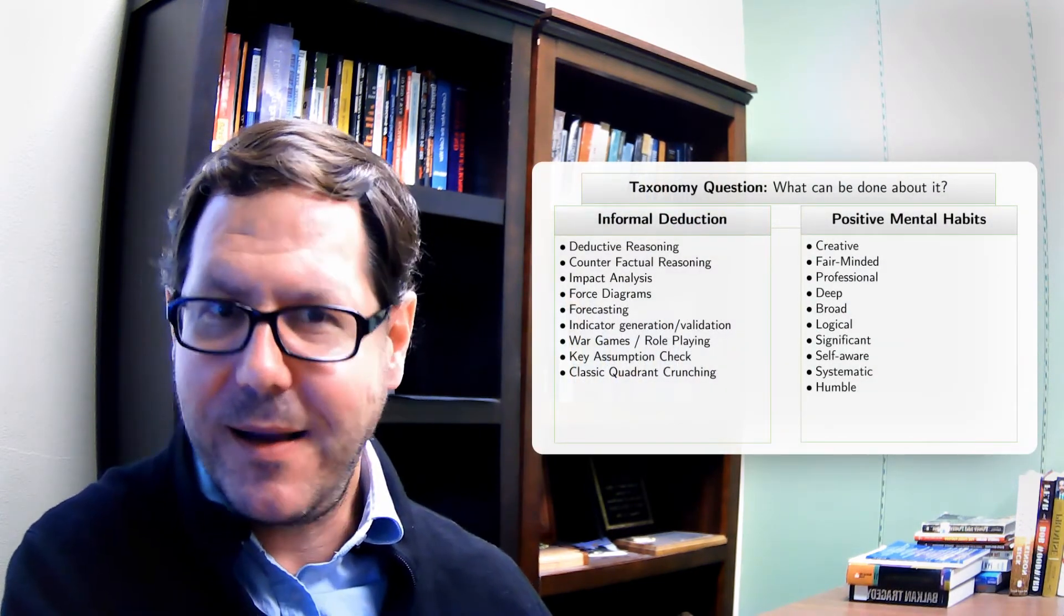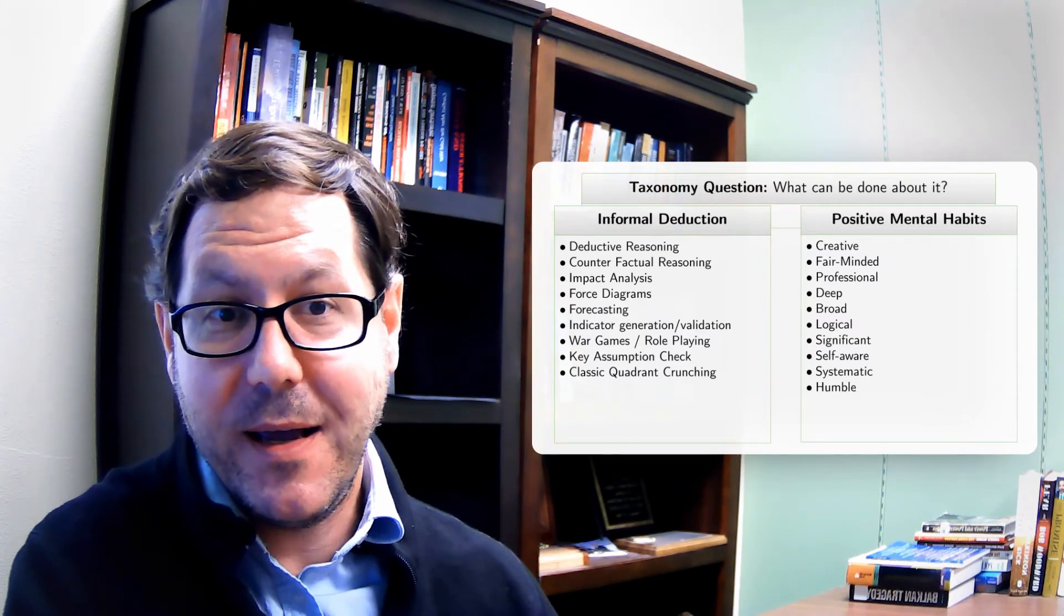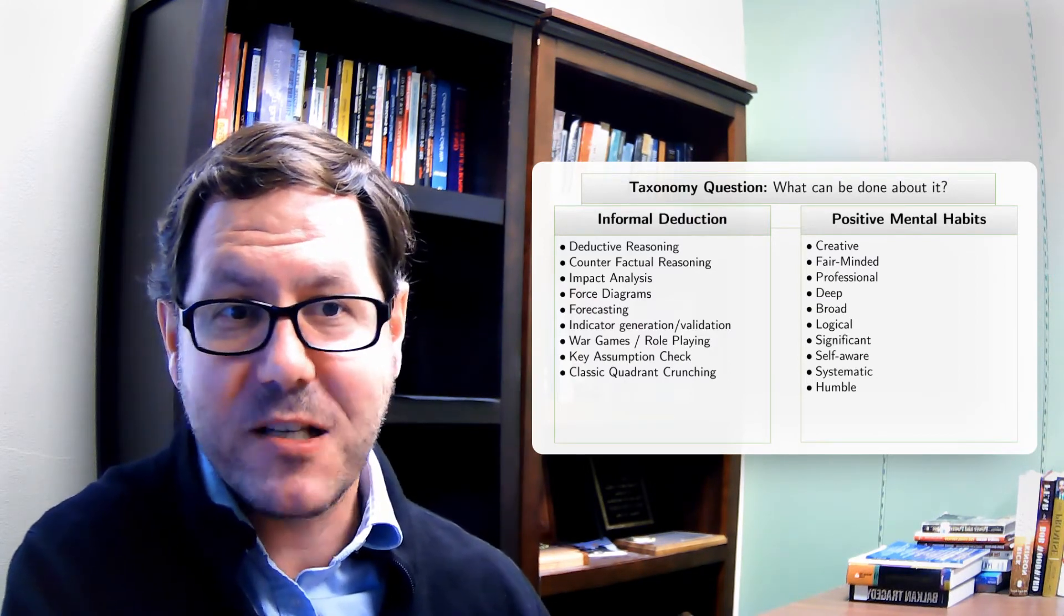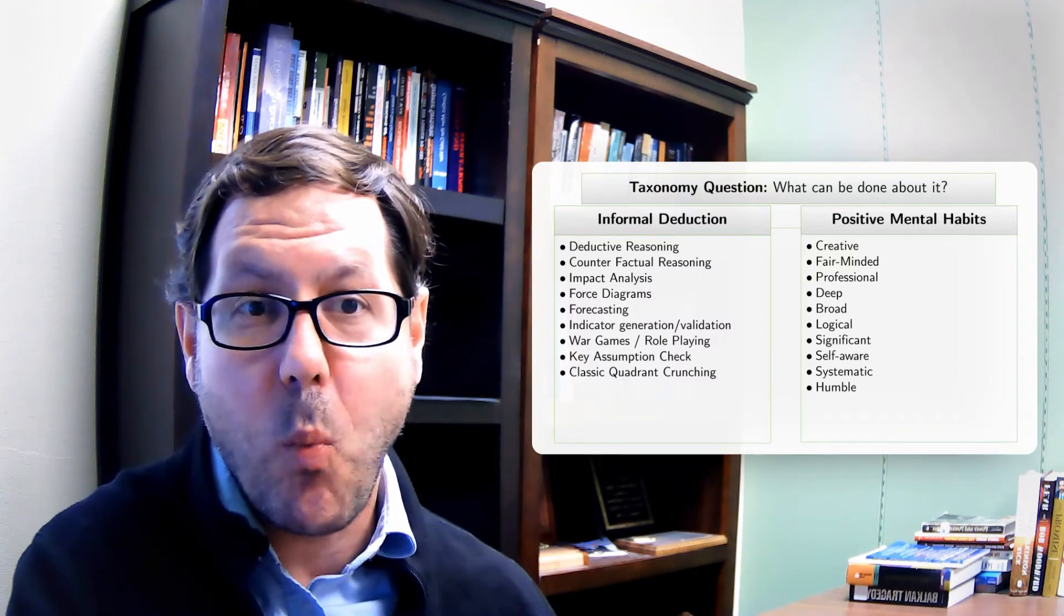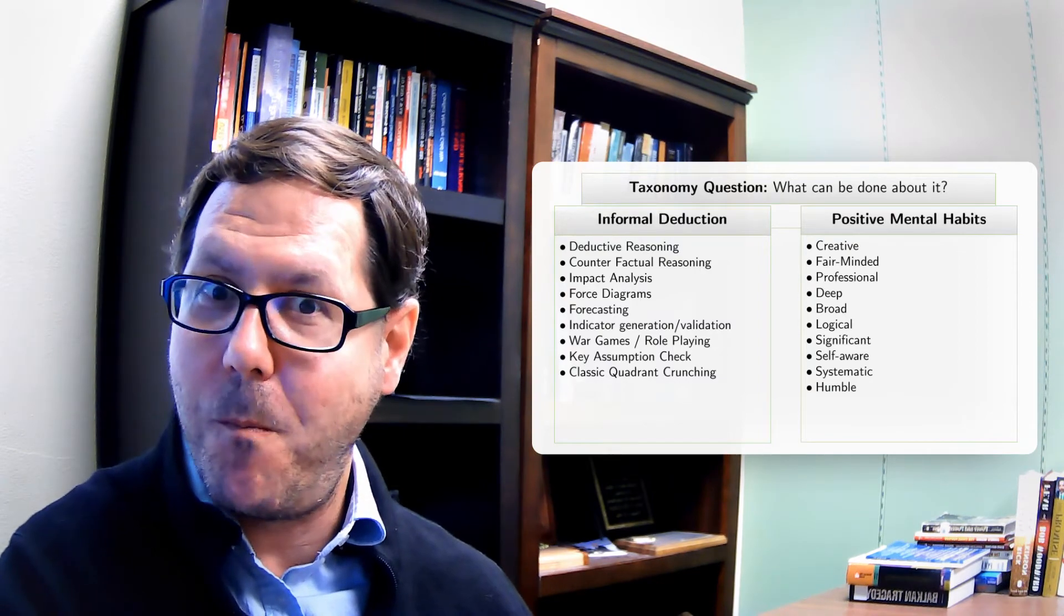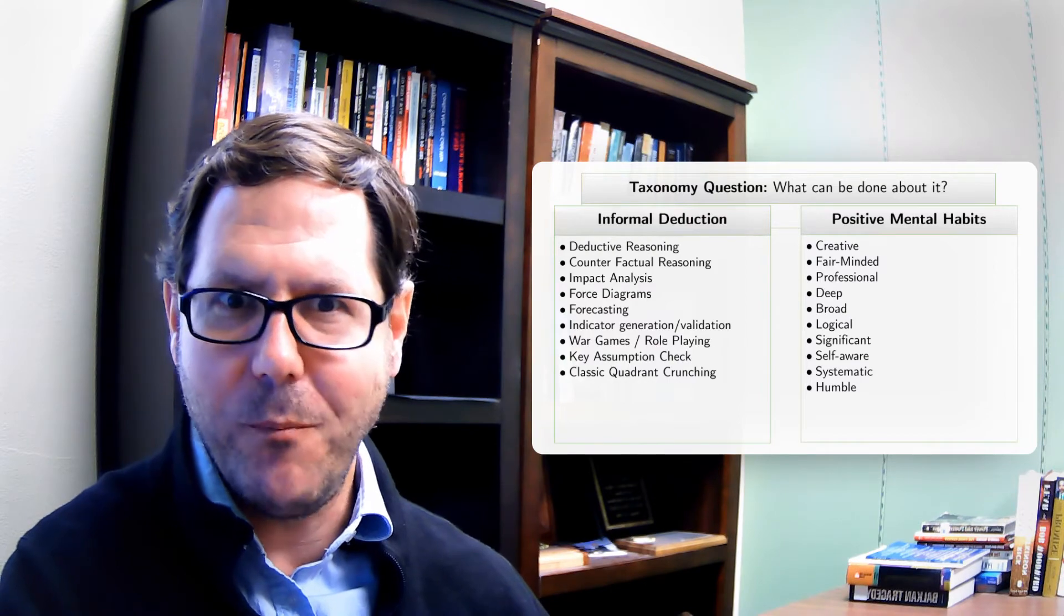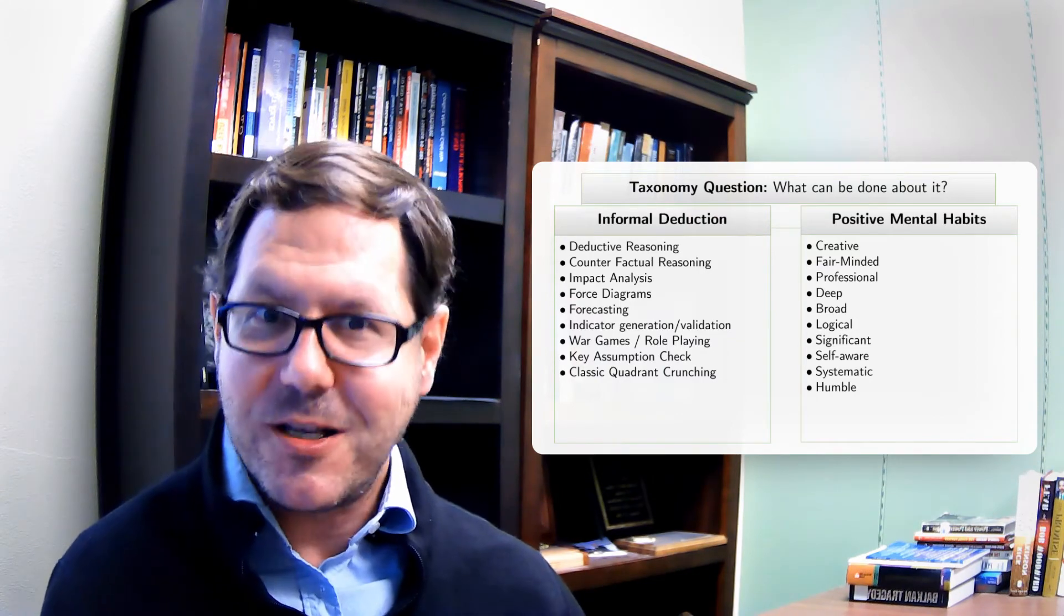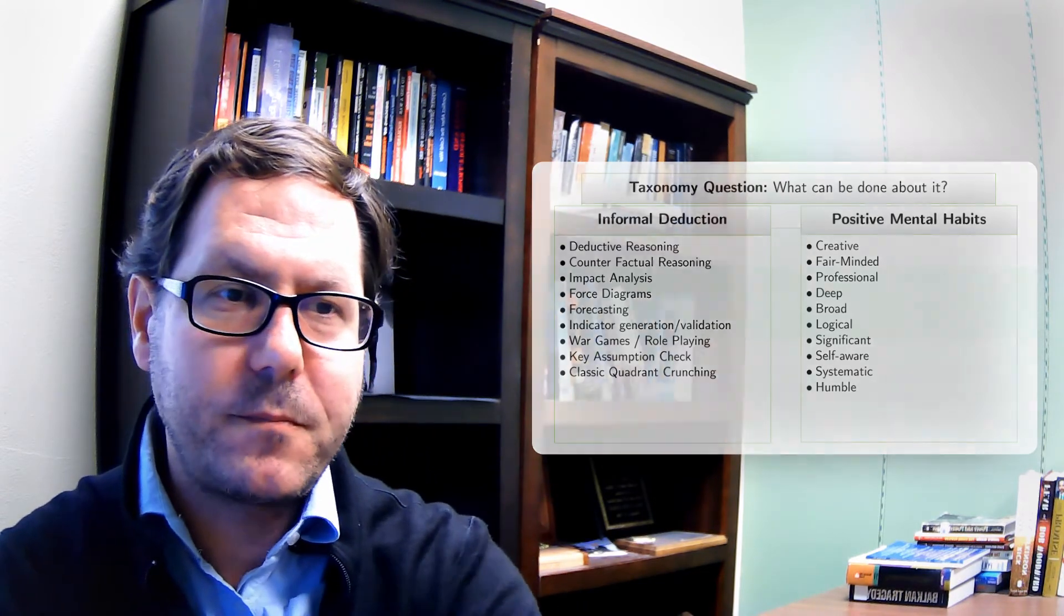When we ask the question about what can be done, again, that's bending into that policy focused question. We might want to add in an impact analysis to our tools of informal deduction. When it comes to positive mental habits, again, there's that sense of being creative that's now part of that story of thinking about a wide variety of different possibilities for how you could approach this and how things might fit together. There's an element professional that's been added in, because we're bending into policy at this point. And we ask our analysts to separate their own policy preferences, their own political views from the analysis that they're providing. There's a level of professionalism that's expected out of an analyst in tackling these kinds of questions that doesn't exist for other kinds of questions.